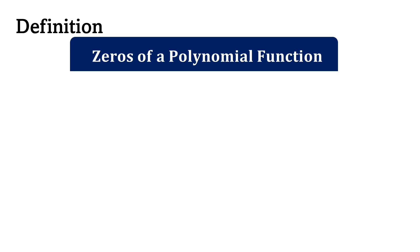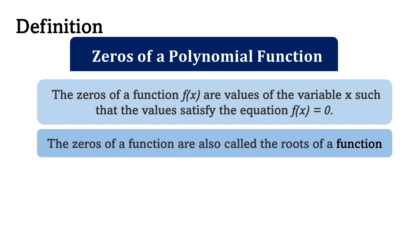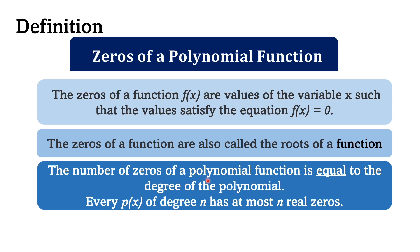Let us recall the definition of zeros of a polynomial function. The zeros of a function f of x are values of the variable x such that the values satisfy the equation f of x equals 0. The zeros of a function are also called the roots of a function. The number of zeros of a polynomial function is equal to the degree of the polynomial.